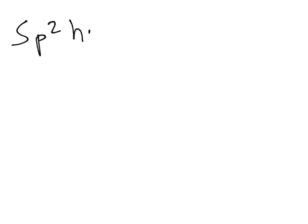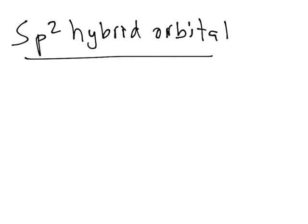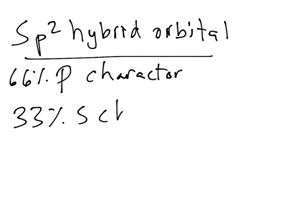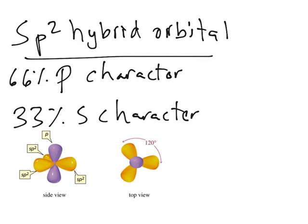The sp² hybrid orbitals—it's 66% p character and 33% s character. An sp² hybridized orbital will look like this. You can see that the lobes are not as long as the ones in the sp³ because there's more s character now. Of course, there's less p character, so they take a little bit more spherical shape, but they're still lobes because the dominant character is p. In this case, the angles between them is 120 degrees.